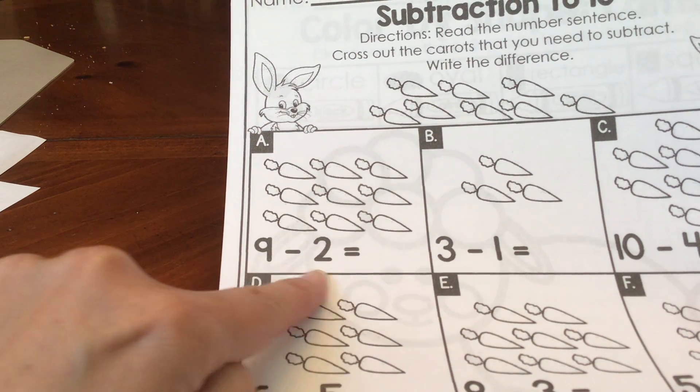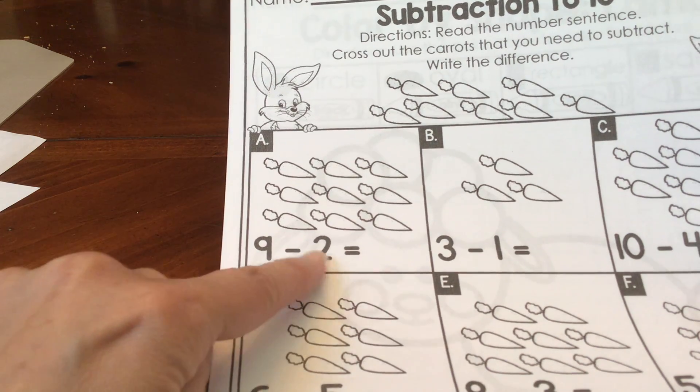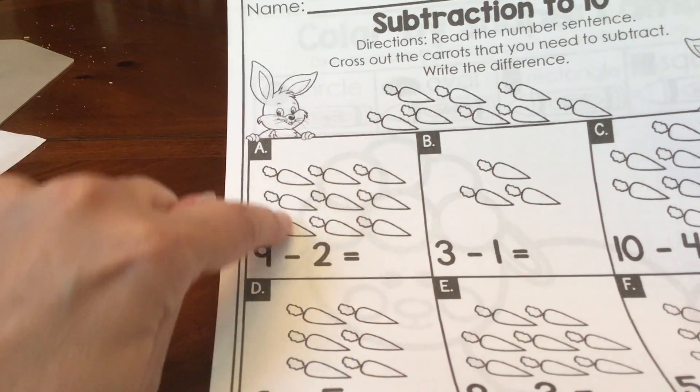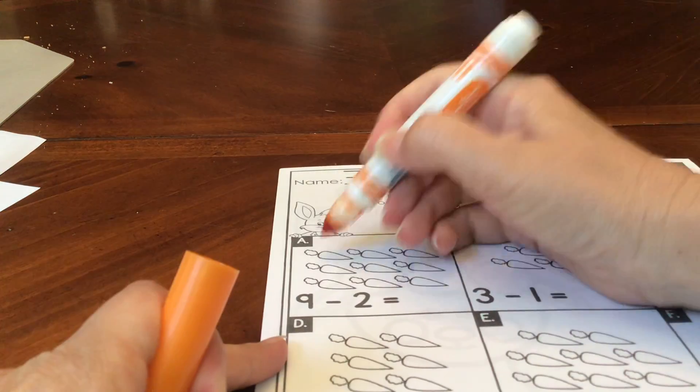Nine minus two equals blank. Nine minus two equals blank. Nine is our whole group. We're going to take away part of the group. We're going to take away the part that has two.